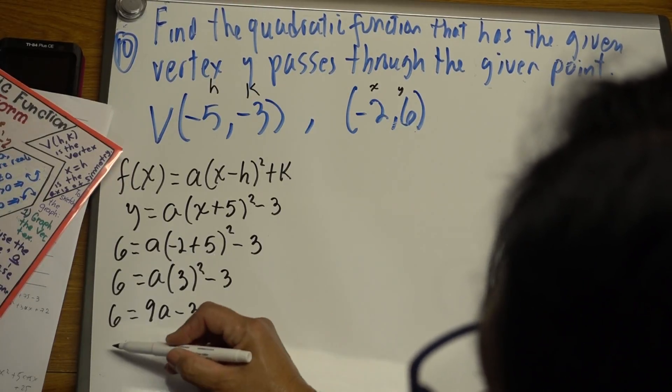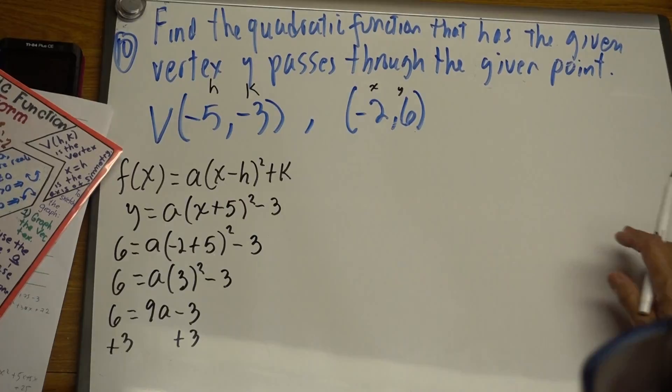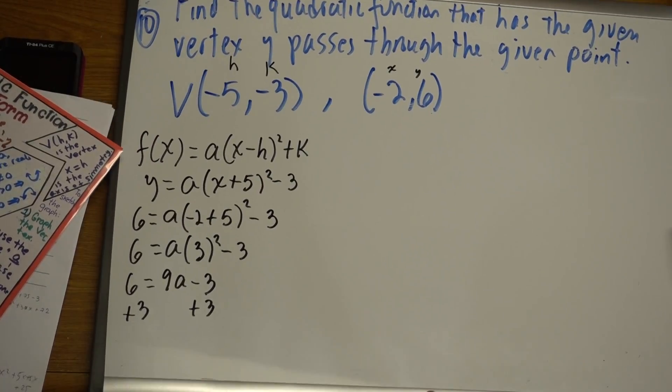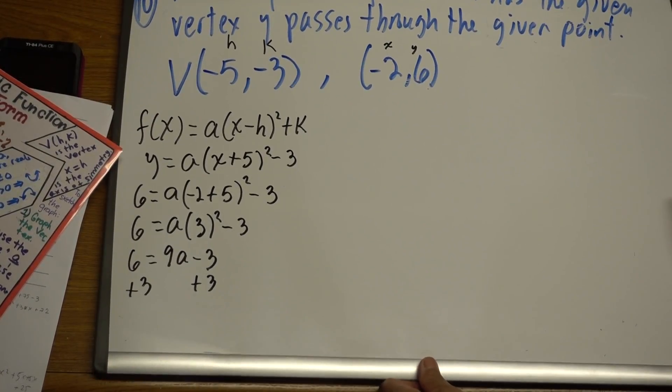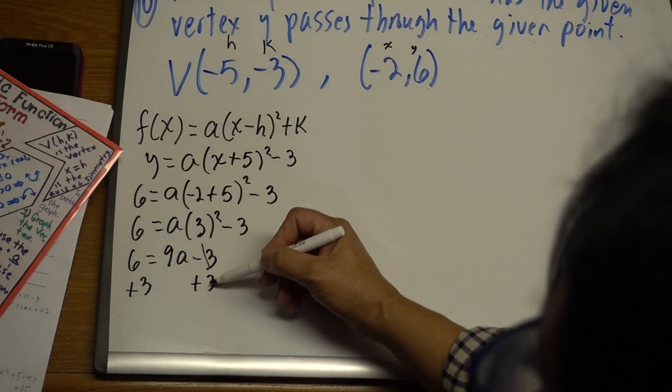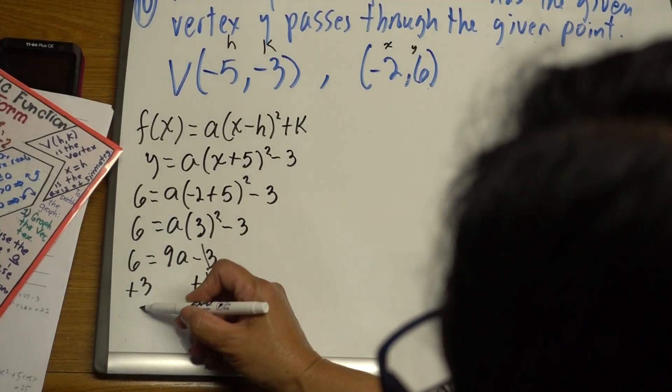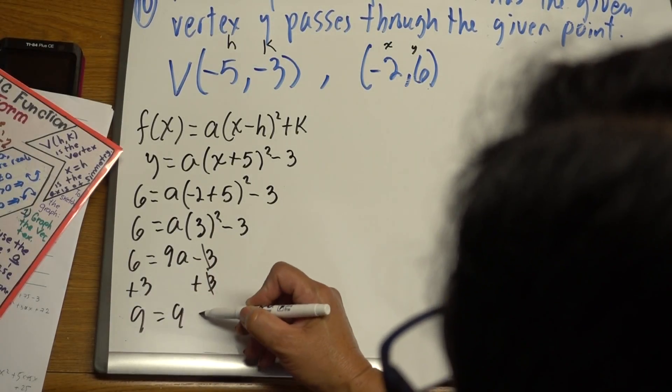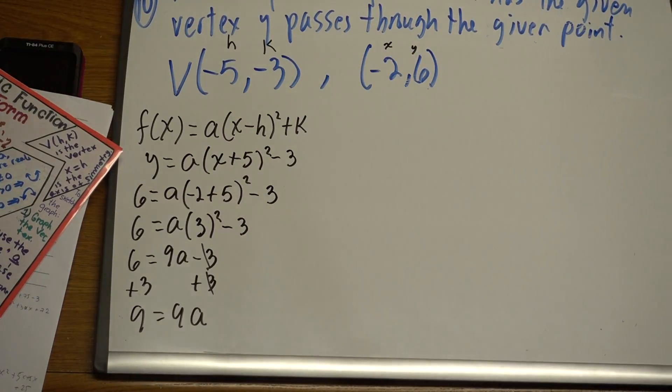We add 3 in both parts of the equation. Let's see if you guys can see this. We cancel this, and we have 9 equals 9a, right? So what is next?